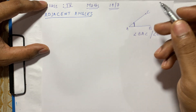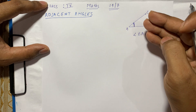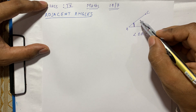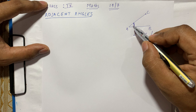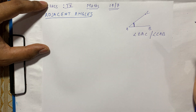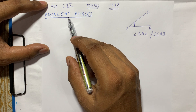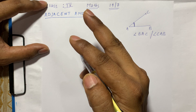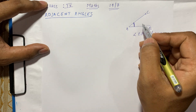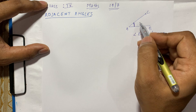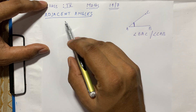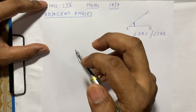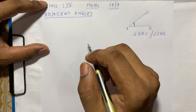Now, the adjacent angle means two angles where one arm is common. The sides of an angle are called its arms. So when we talk about adjacent angles, it means any two angles where one side, or arm, is common.